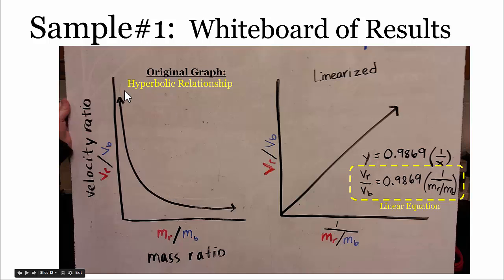This original graph looked like a hyperbolic relationship, and they linearized it or re-expressed this to get a straight line so they could write an equation in the form of a slope-intercept form of y equals m times x plus b. They inverted the x variable.